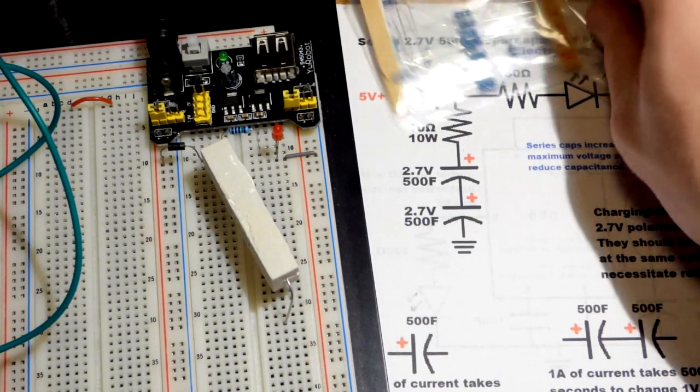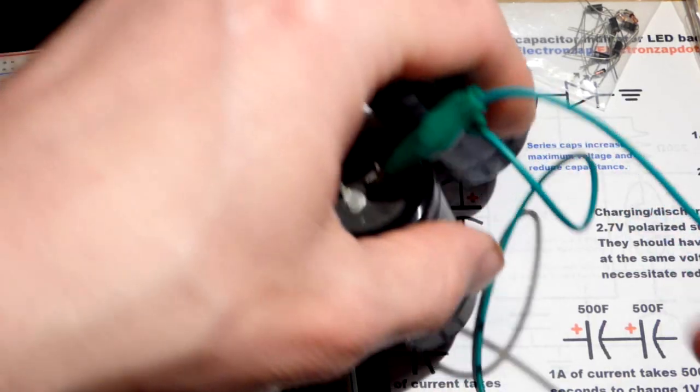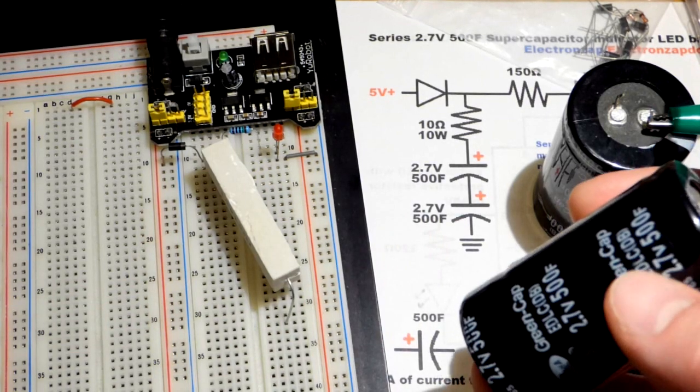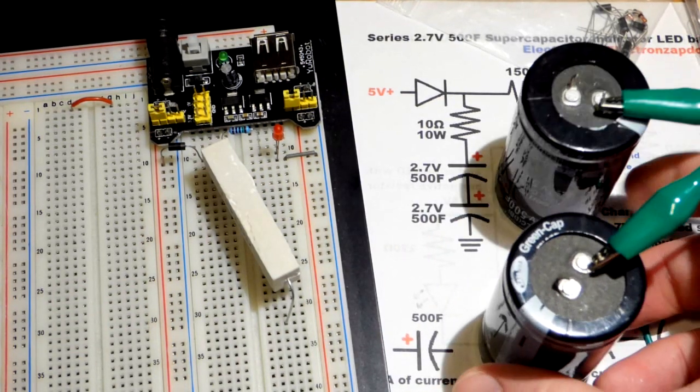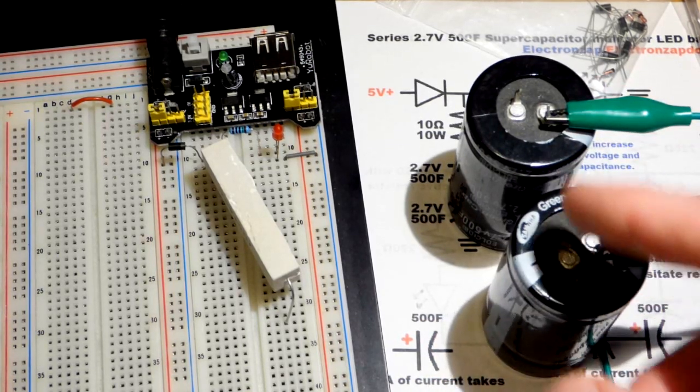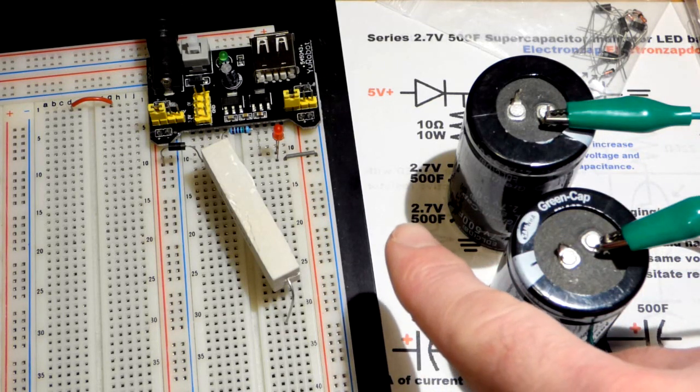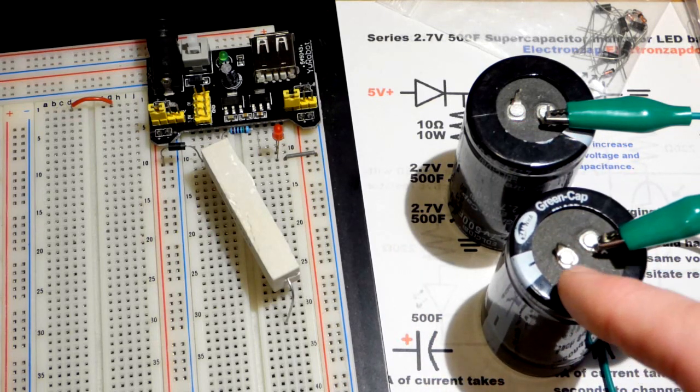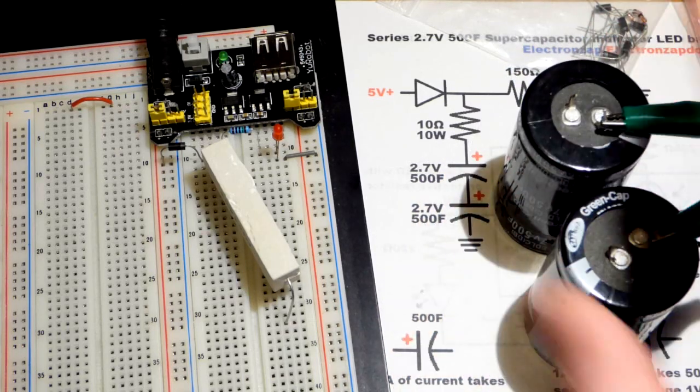Now the supercapacitor. I got them in series because they're only rated for 2.7 volts. You can see that right there, 2.7 volts, and they claim 500 Farad. Putting them in series, now we can actually charge these if they're equally charged to 5.4 volts, so double the voltage.